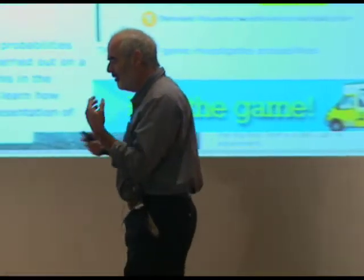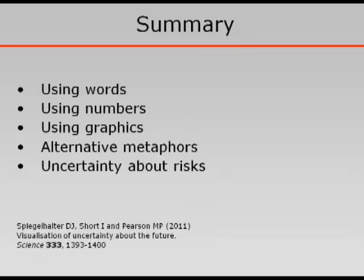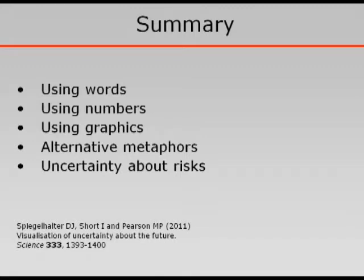This is looking at evidence-based approaches of communication — really exciting stuff. What I'm going to talk about today is the different ways in which we might communicate risk and uncertainty: using words, using numbers, using graphics, my favorite alternative metaphors, and the importance of narratives and stories. How can we turn our things into stories that grip people's imaginations? And talk briefly about acknowledging uncertainty about the risks. The main reference for this is a recent review in Science on visualization of uncertainty, which you can download from our website.